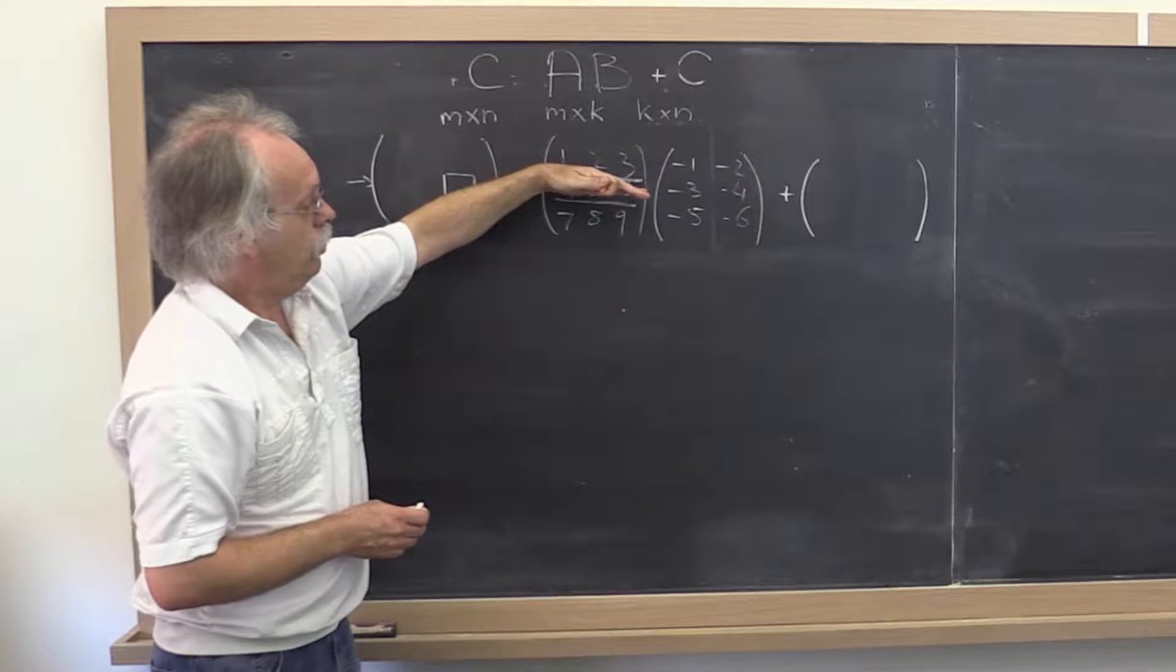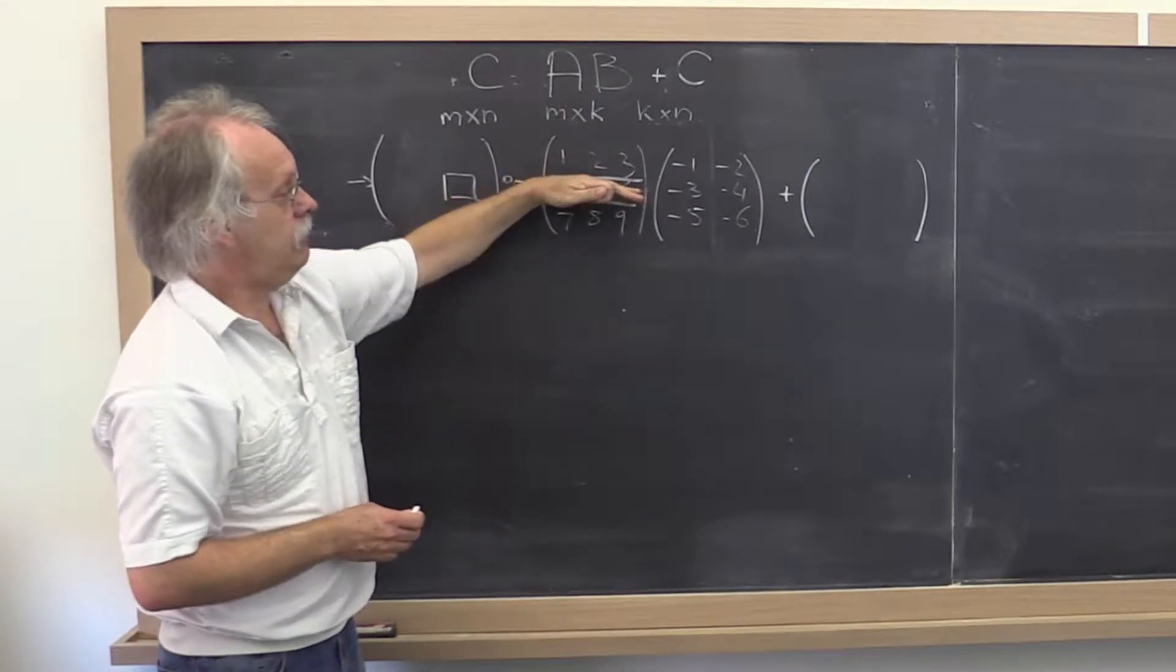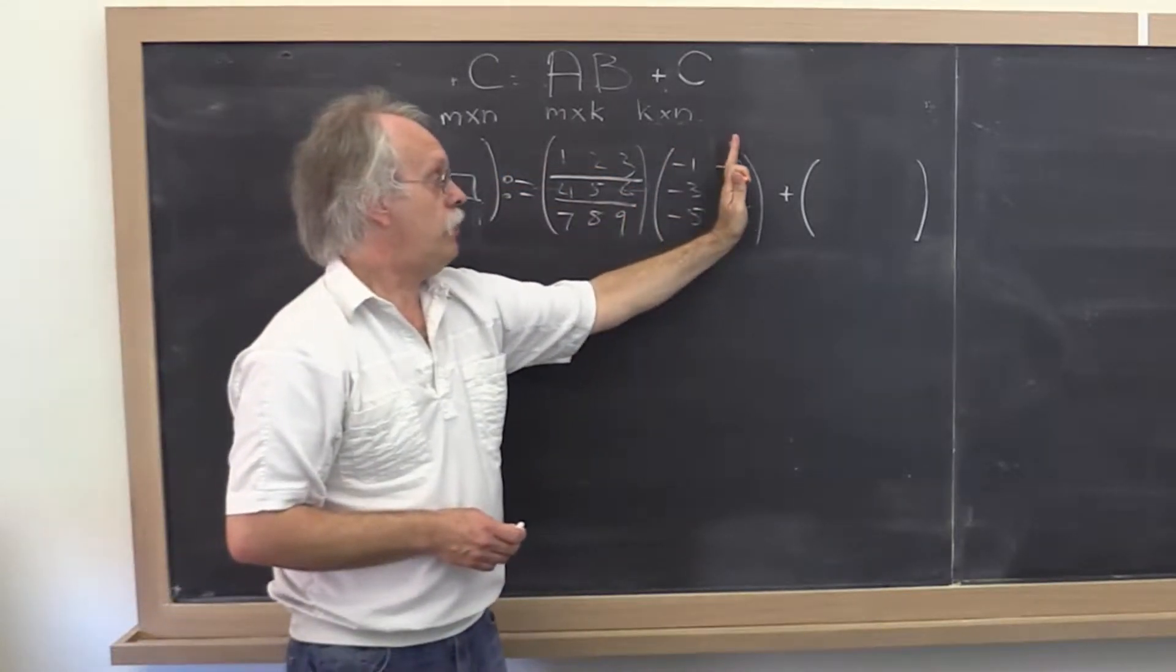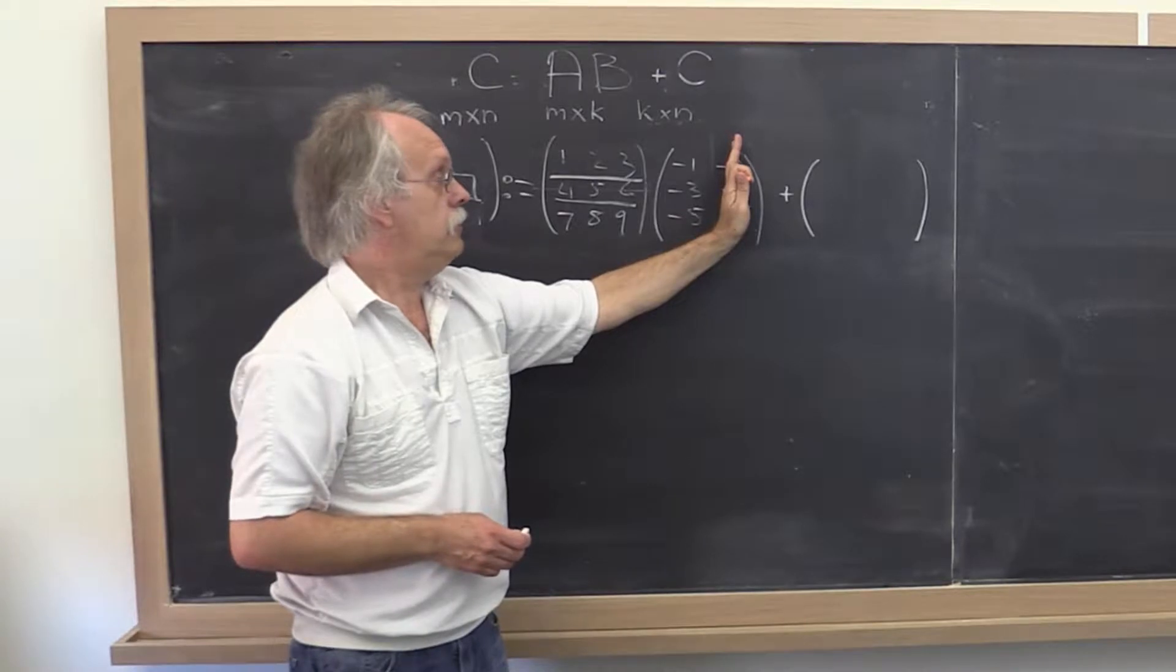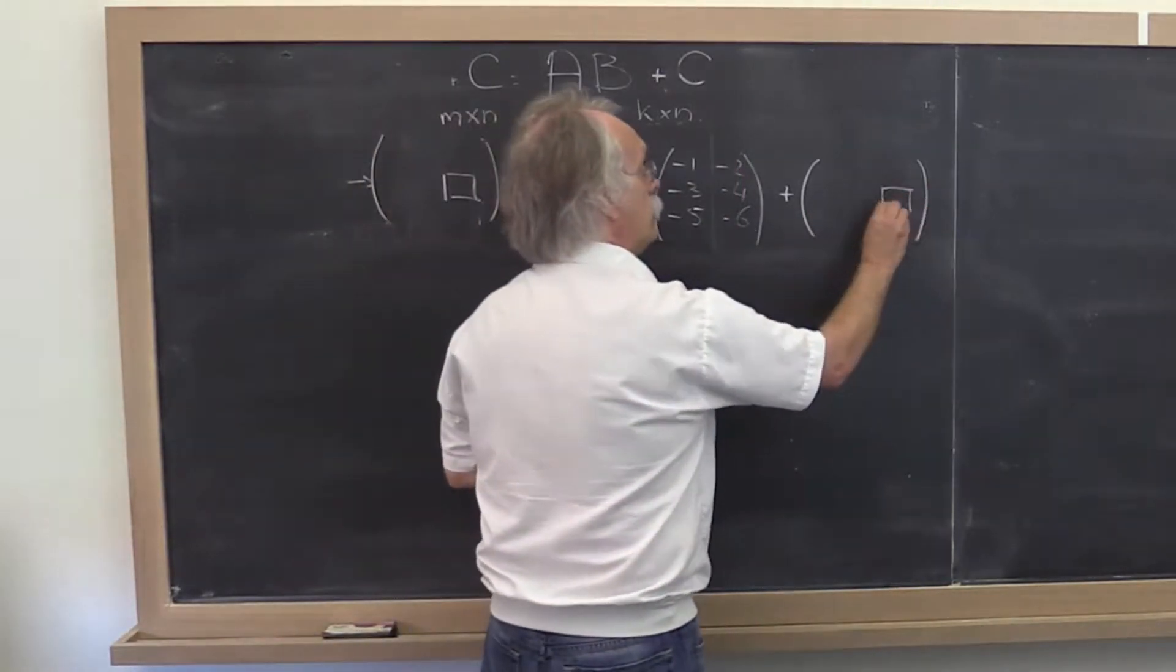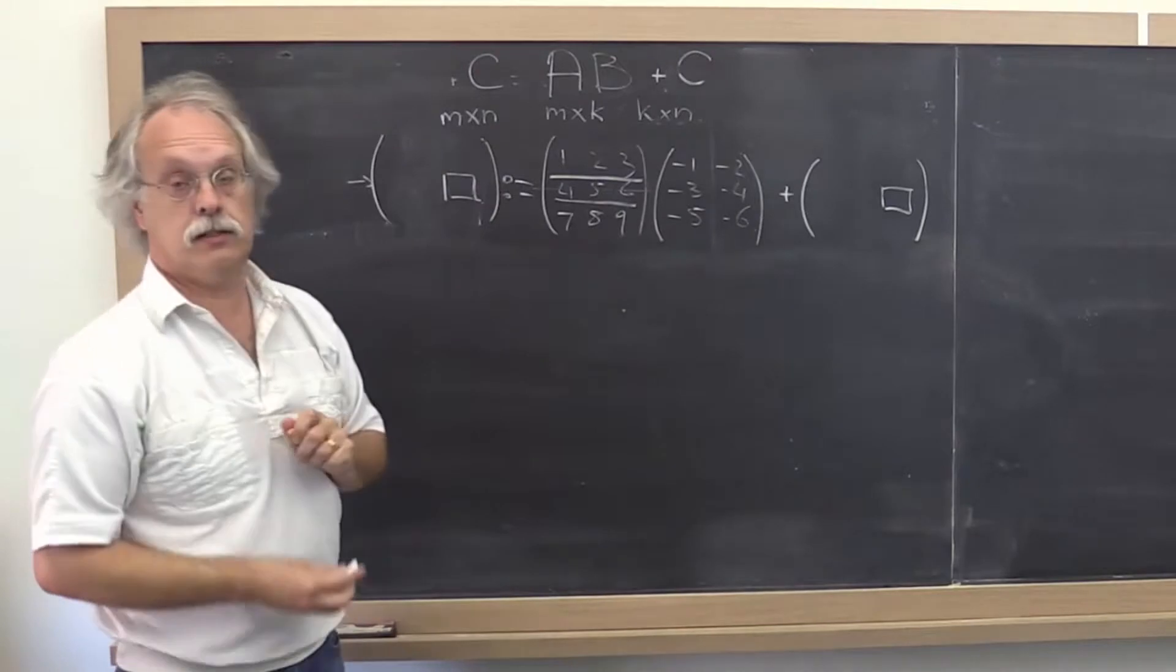It's this row of A in a product with that column of B added to that element of C.